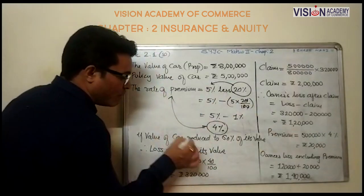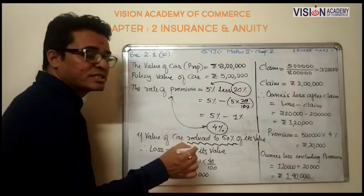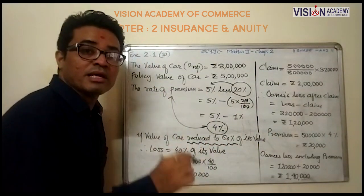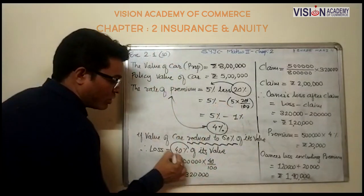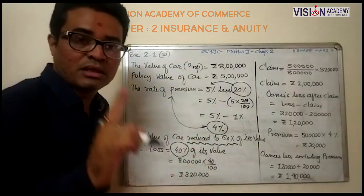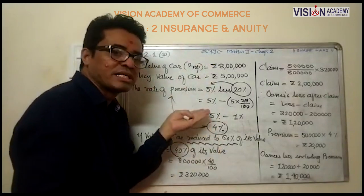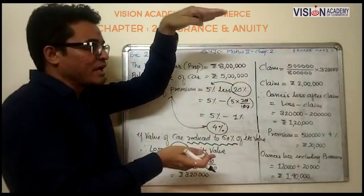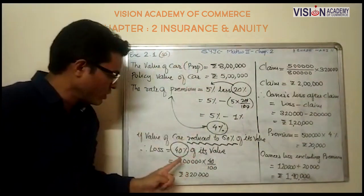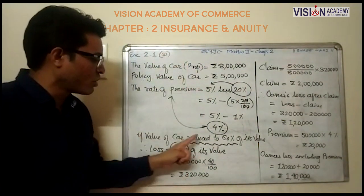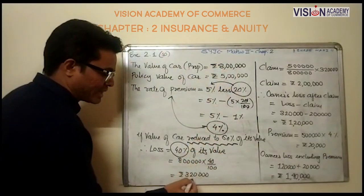If the value of the car reduces to 60 percent of its value, this is the most important part. Value reduces to 60 percent means the loss is 40 percent. So loss is 40 percent of property value 8 lakhs.